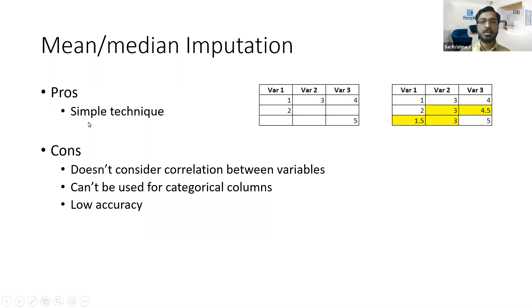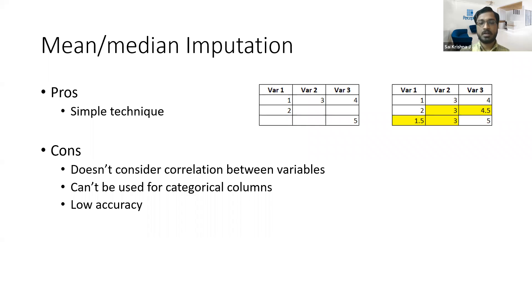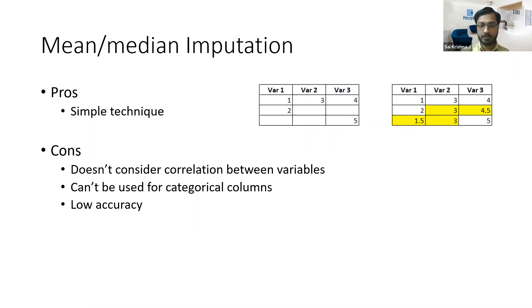The advantage of this technique is that it is a very simple technique. There are many disadvantages though. It doesn't consider the correlation between variables — in data science there is a term called the interaction effect, and that interaction effect does not figure in mean imputation because for each column you are just taking the mean of values in that column only. Also, it cannot be used for categorical columns since mean or median requires a numerical variable.